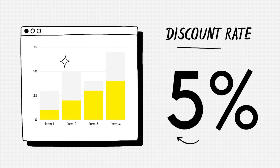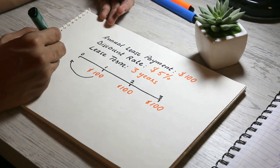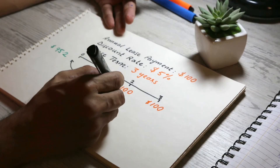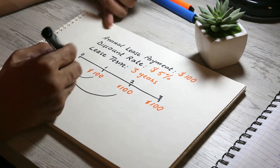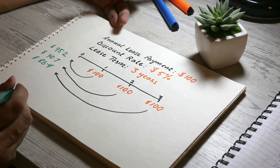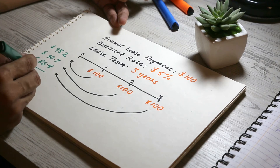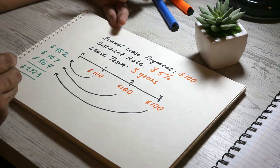The discount rate used is normally the interest rate implicit in the lease. If that is not available, it is the lessee's incremental borrowing rate. We will not go into those technicalities in this video. For now, our discount rate is 5%. Based on this rate: the $100 payment at end of year 1 is worth $95.2 today; the $100 payment at end of year 2 is worth $90.7 today; and the $100 payment at end of year 3 is worth $86.4 today. The total principal amount owed is the sum of these present values, which is $272.3. So we recognize the lease liability at $272.3 at initial recognition.